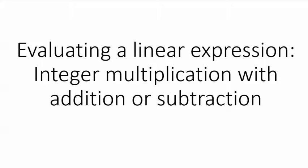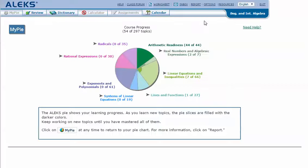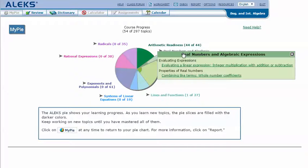Evaluating a Linear Expression: Integer Multiplication with Addition or Subtraction. In your ALEKS, mouse over the light green slice 'Real Numbers and Algebraic Expressions' to reveal the drop-down list of topics you need to cover. Click on 'Evaluating a Linear Expression: Integer Multiplication with Addition or Subtraction.'